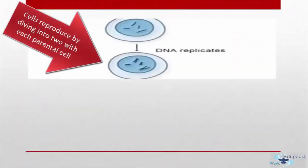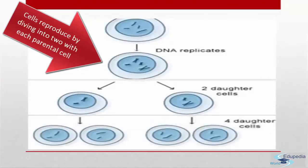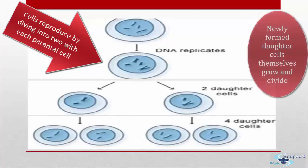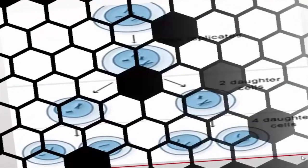All cells reproduce by dividing into two, with each parental cell giving rise to two daughter cells. Each time they divide, these newly formed daughter cells can themselves grow and divide. Such cycles of growth and division allow a single cell to form a structure consisting of millions of cells.